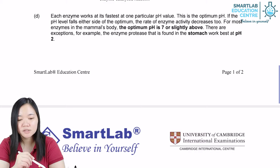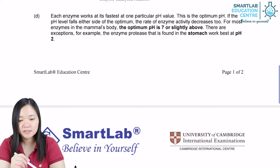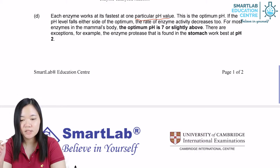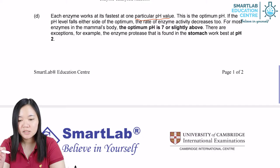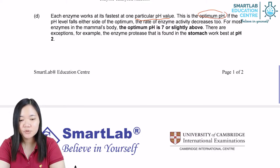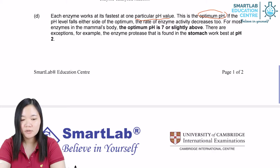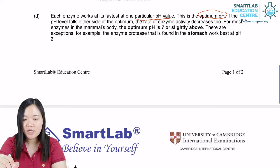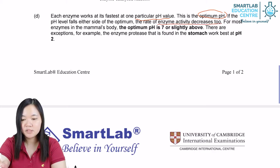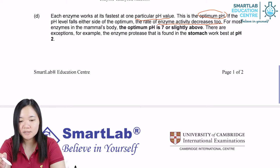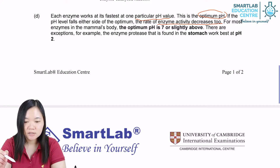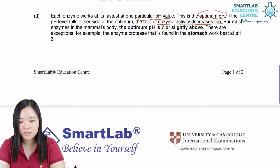Each enzyme works at its fastest at a particular pH value. This is the optimum pH. Different enzymes will have different optimum pH. The rate of enzyme activity decreases when the pH value is not at its optimum.